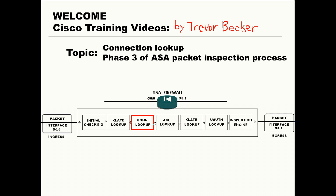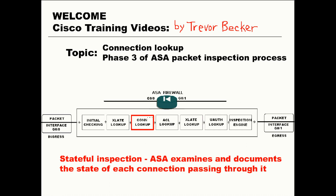Connection lookup is the third phase of the packet inspection process Cisco ASA firewalls perform on incoming packets. Cisco ASA implements stateful packet inspection.